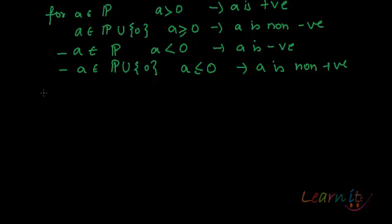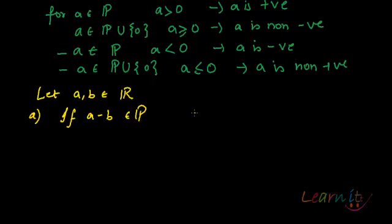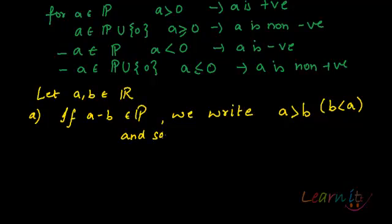Now finally, giving you the order property of R. Order relation on R: let a and b be two real numbers. Number one: if a minus b belongs to P or the positive set of numbers, we will write a is greater than b, or b is less than a, and say that a is bigger than b.